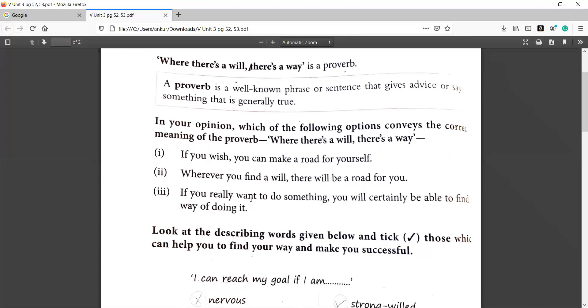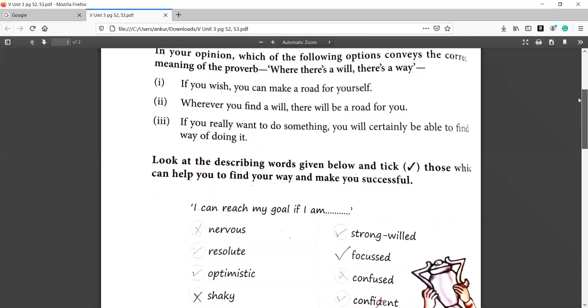And the third interpretation is, if you really want to do something, you will certainly be able to find a way of doing it. So agar aap sach mein kuch karna chahate hain, certainly means sure, pakka, aapko koina koji tariqa mil jayega. Toh matlab aap sach mein agar kuch karna chahayenge, toh aapko koina koji raastah ya tariqa ka usse karne ka mil hi jayega. Aapke opinion mein, in teenoh mein se, kya iska matlab hoka.